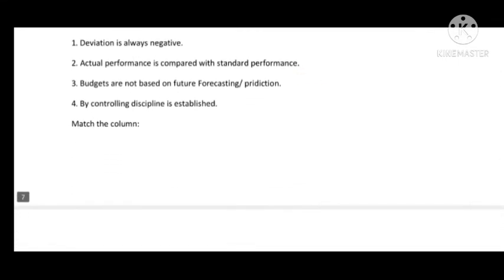Unit 8 — Controlling. True/False: Deviation is a negative process — True. Actual performance is compared with standard performance — True. Budgets are not based on future forecasting/prediction — False, because budgets are always based on future predictions.